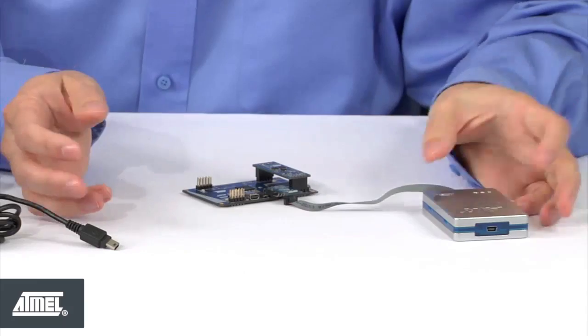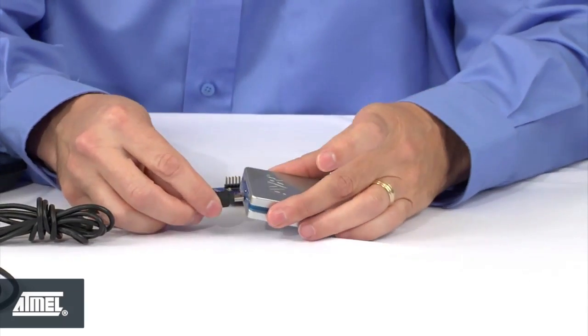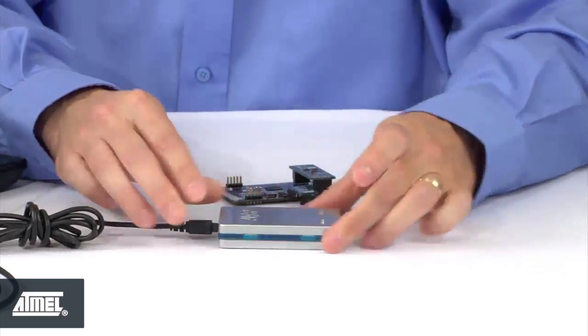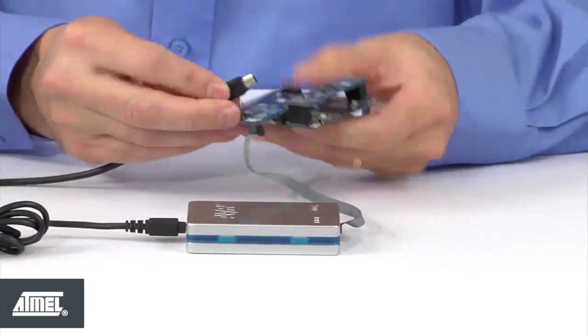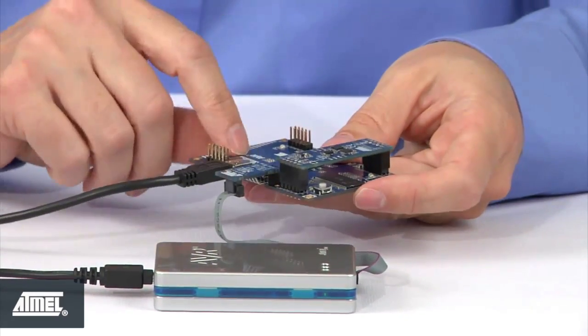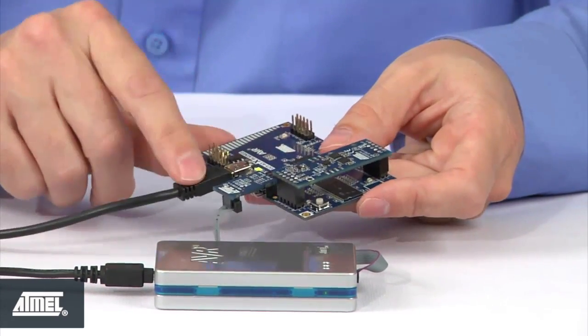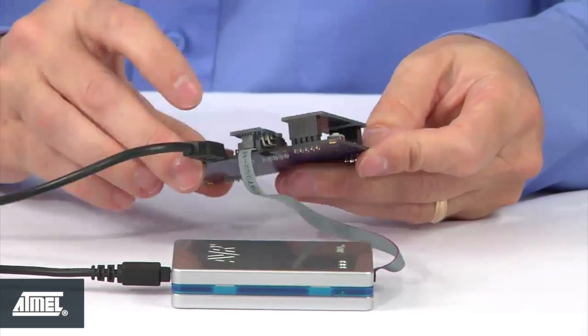The next step is simply the USB cables for both the programmer and the board itself. We plug in the programmer. We can see the lights come on for power. We plug in the USB cable to the UC3 board itself. The board uses this for both data communication as well as power, so there's no need for any other power supply for the board.